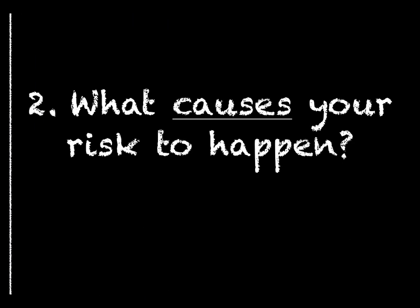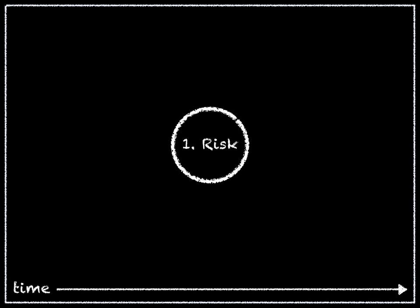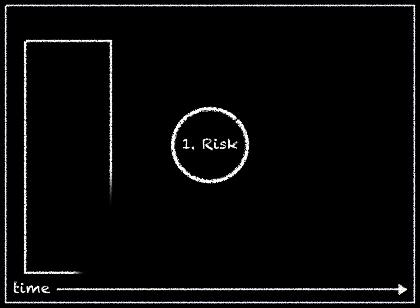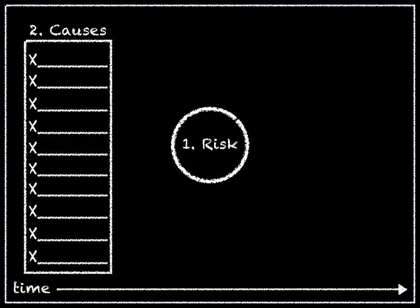Step 2: What causes your risk to happen? On the left-hand side of your paper, list all of the sources, situations, hazards or risks which may cause your risk focal point to occur. These causes can either be direct or indirect. List them all here.